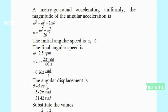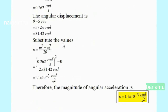The angular displacement is theta equals 5 revolutions, which must be converted into radians. Theta equals 5 times 2 pi radians, giving theta equals 31.42 radians. Now substituting the values, the angular acceleration alpha equals omega squared minus omega naught squared divided by 2 theta.